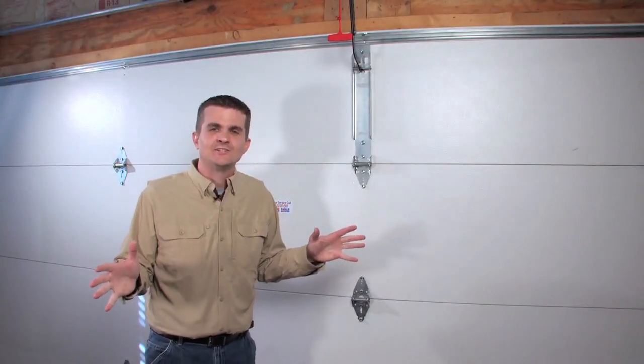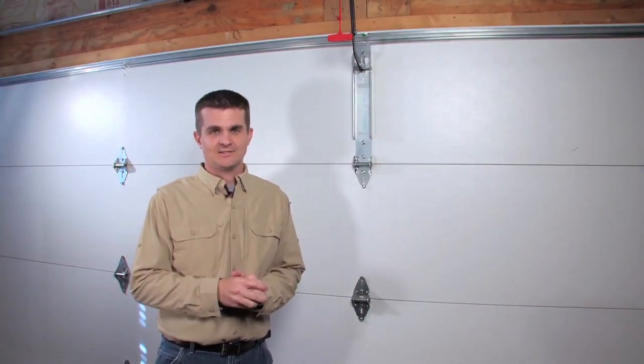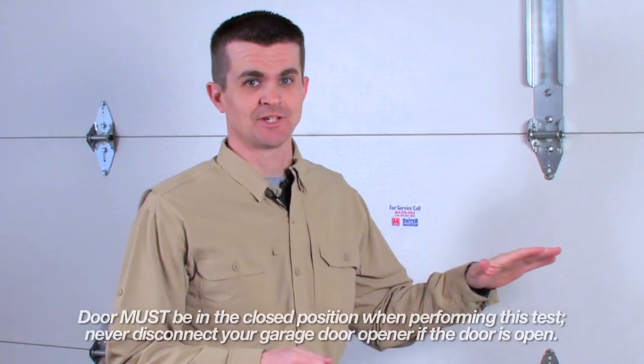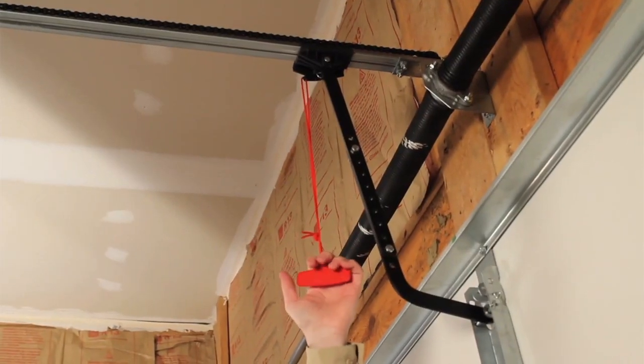Another general inspection that any homeowner can perform is the door balance test. To perform this test, first make sure that the door is in the closed position. Then disconnect the opener from the garage door.